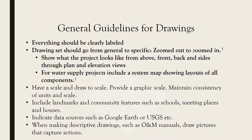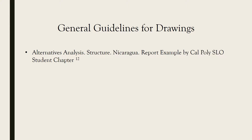For water supply projects, include a system map showing layouts of all the components. To illustrate this, we'll use an example provided by EWB USA of a structure built in Nicaragua by a Cal Poly student chapter.